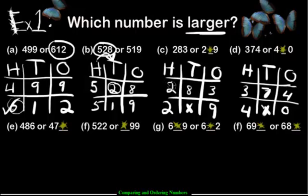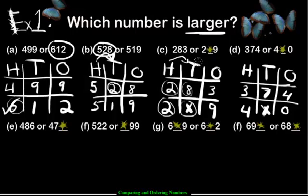How about the next one? We have 283 and 2-star-9. We don't really know what's under the star — it could be any number from 0 to 9. Follow the rule: most hundreds is the bigger number, but it's a tie — both have two hundreds. So jump to the tens. This number has 8 and this number we're not sure about. You can't jump to the ones unless you're sure it's a tie in the tens. So here we write: not sure. We're not sure which number is bigger.